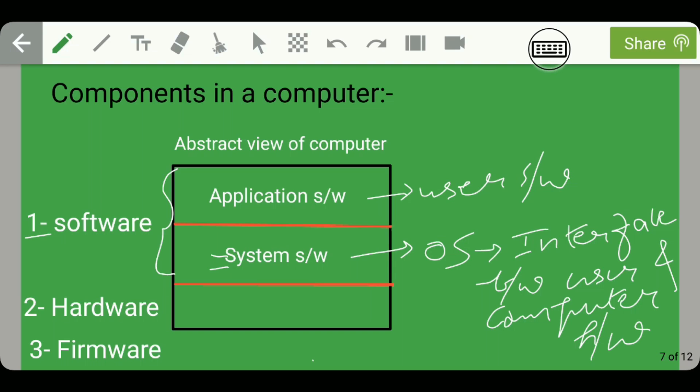The second components in a computer are hardware. Keyboard, mouse, monitor, etc. come under the category of hardware. And the third component of a computer system is firmware. Firmware can be defined as a combination of both hardware and software.